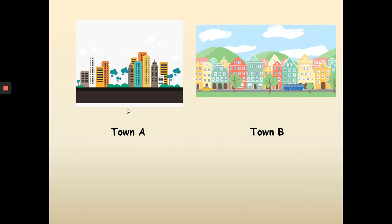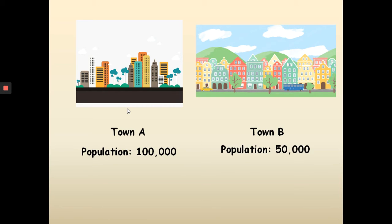Now let's take a look at the second example. Let's say that town A now has 100,000 people, while town B has 50,000 people. Based on given information, you know that the populations are not equal — meaning the quantity of population between town A and B are not the same.